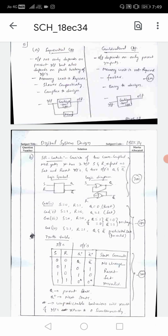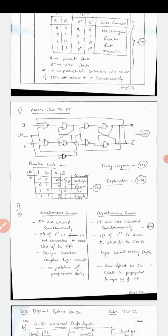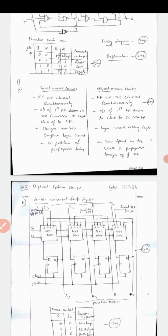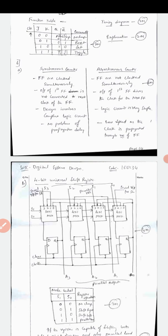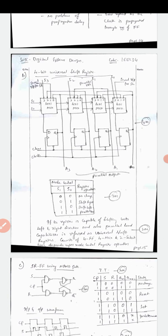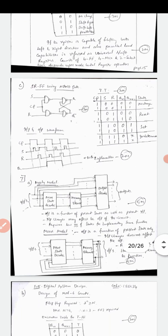Question 5B on SR latch: write the definition, followed by the diagram, then the cases and truth table - marks divided as 2+2+2+2. For the Master-Slave JK flip-flop: logic diagram 2 marks, functional table 2 marks. Question 6A on synchronous vs asynchronous counters: write the difference - you need a minimum of 4 differences to get 6 marks.